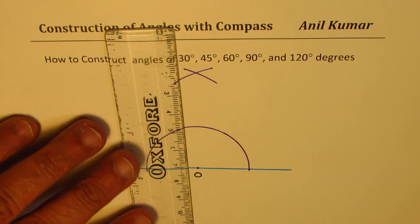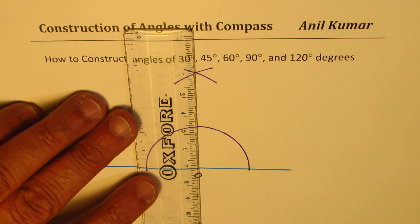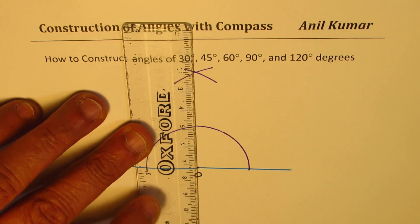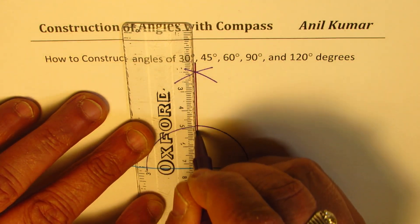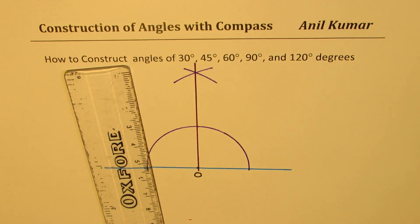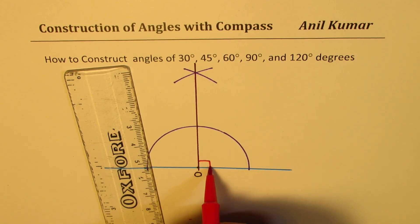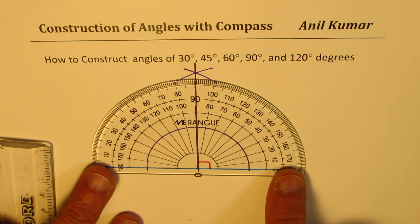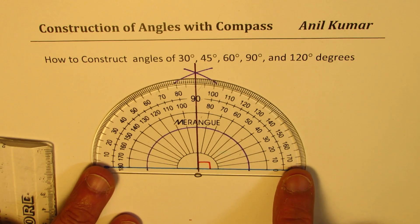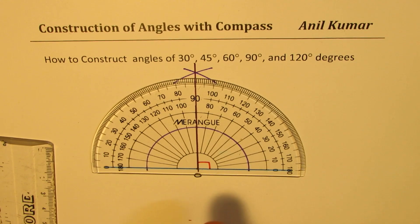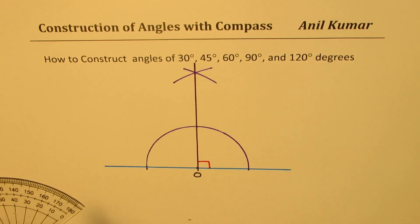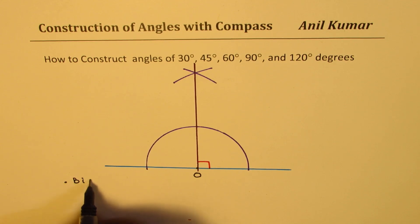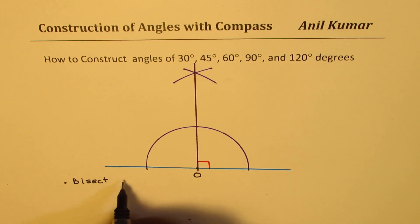With this arc we get a point right on top of O, and joining this line gives us a right angle to the horizontal line. Joining it gives us half of 180 degrees — exactly 90 degrees. If we measure with the protractor, it matches perfectly at 90 degrees. So step one: bisect 180 degrees to get 90 degrees.